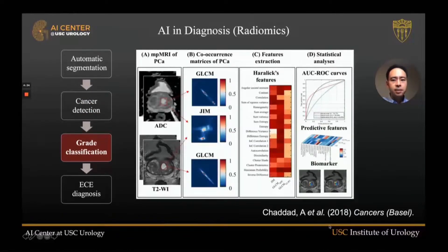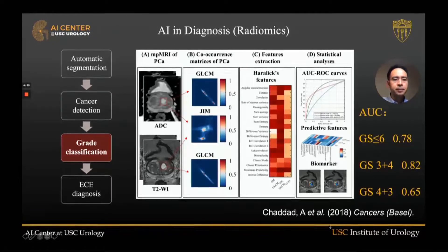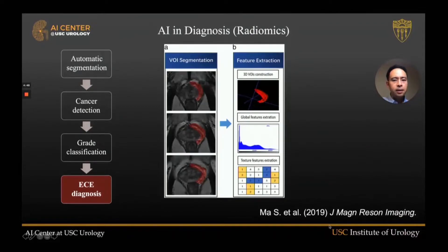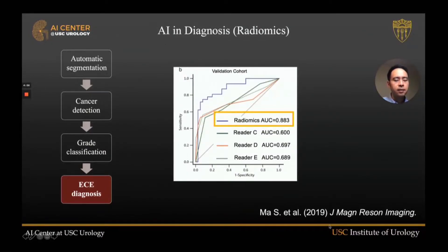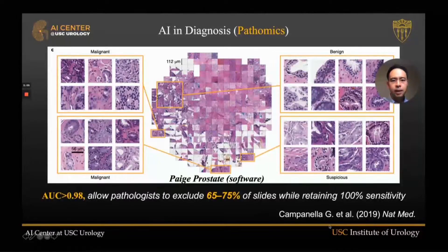For cancer classification, a similar model applied to MR of the prostate predicts what the Gleason score may be, with robust AUC performance. With prostate cancer MR imaging, looking at the capsule for extracapsular extension, radiomics again outperforms manual review by trained radiologists.